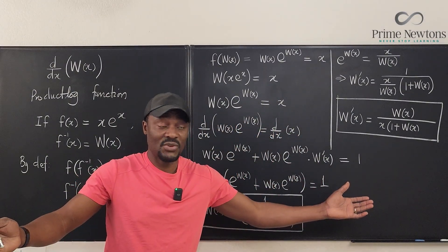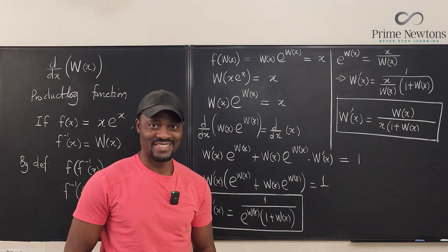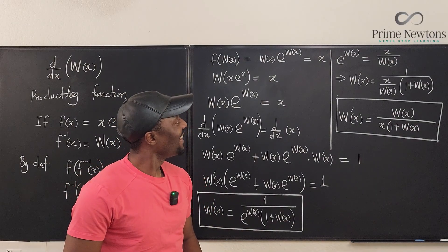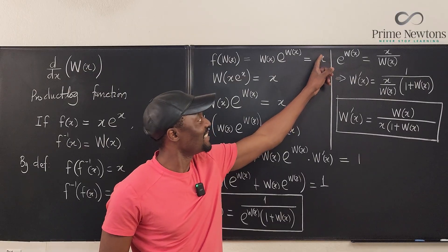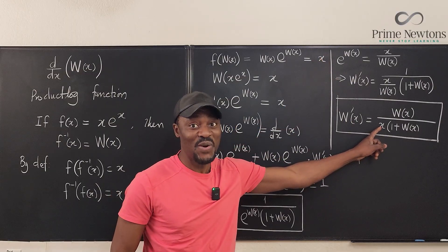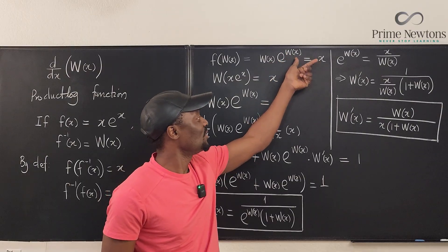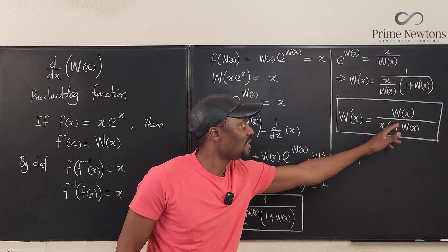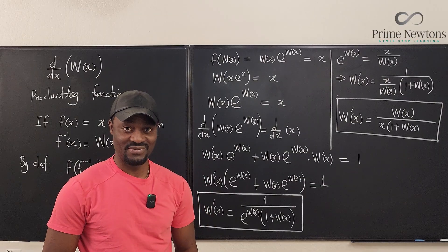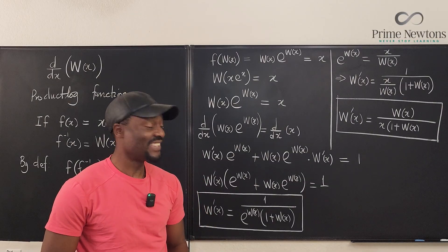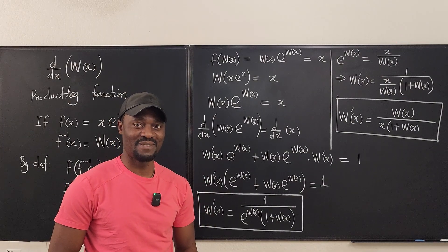There's a third version as well — that's on you to explore. You can replace the X with W(X)·e^(W(X)) so there's no X at all, and it looks a little unusual but is quite beautiful. Never stop learning — those who stop learning stop living. Bye!